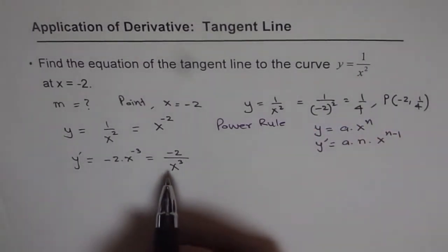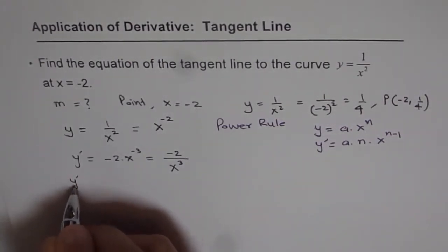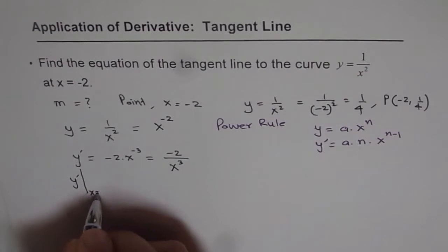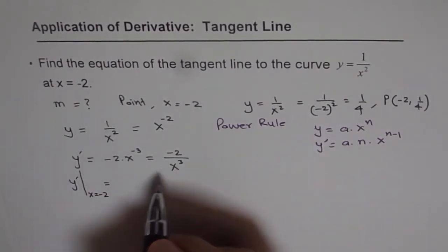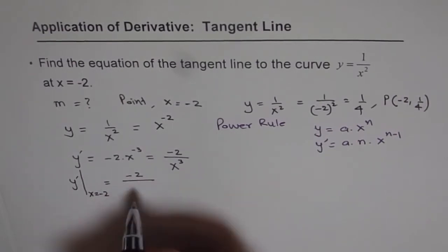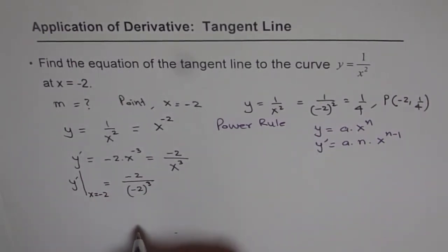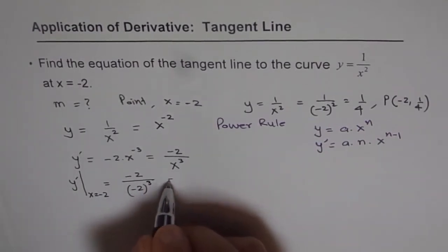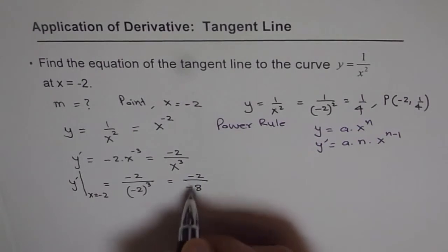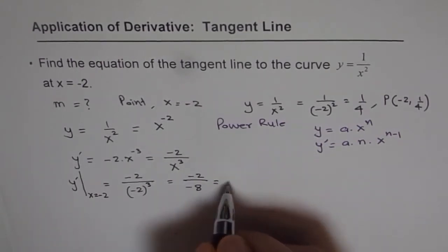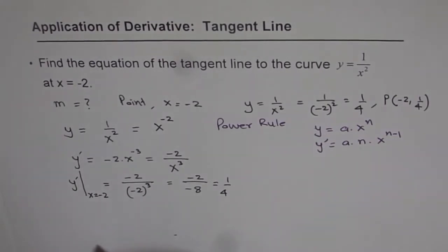What we are interested in is the slope at x equals minus 2. So we evaluate y-dash at x equals minus 2 by substituting minus 2 for x: that gives us minus 2 divided by (minus 2) cubed. Since minus 2 cubed is minus 8, we have minus 2 divided by minus 8, which gives us a slope of 1 over 4.